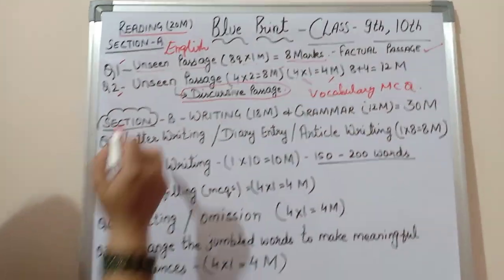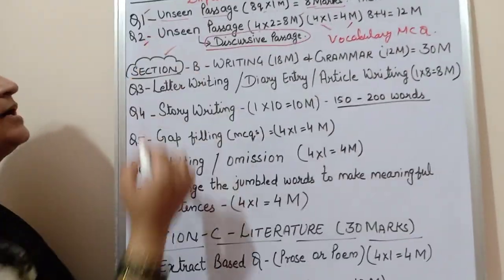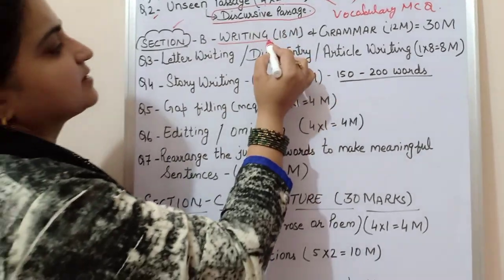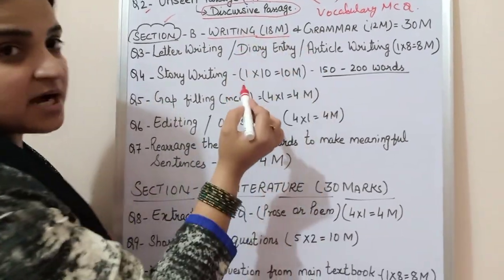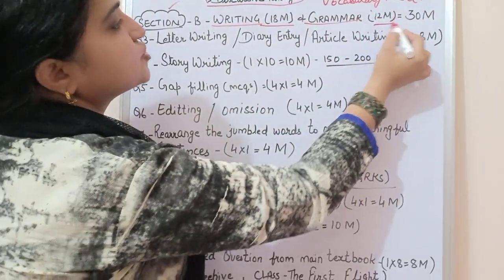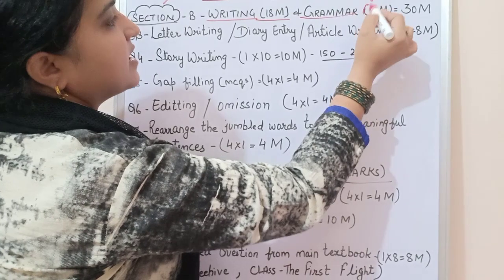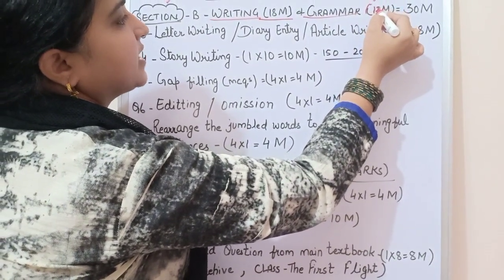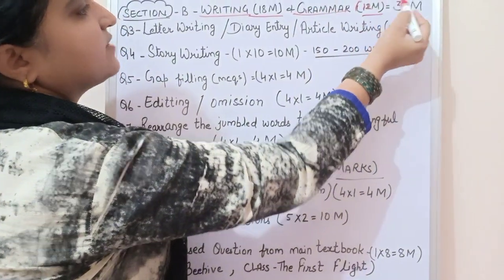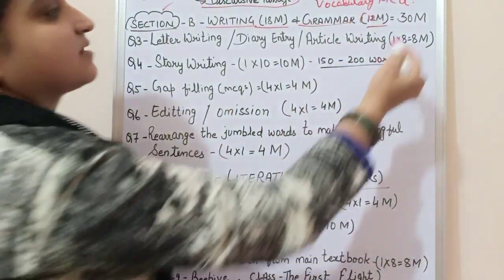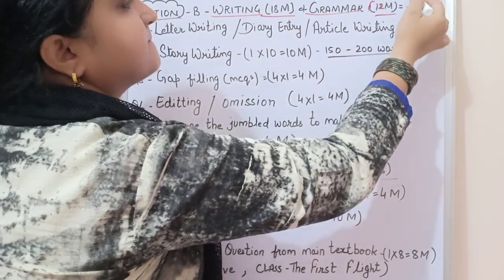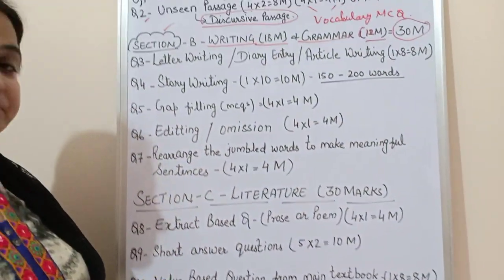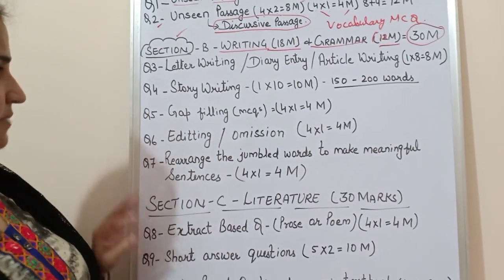Now we move to Section B. Section B covers Writing — 18 marks — and Grammar — 12 marks. So 18 plus 12 equals 30 marks total for Section B.